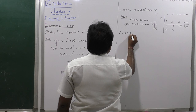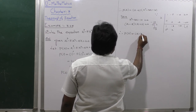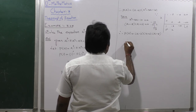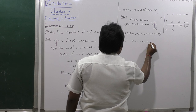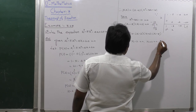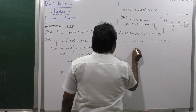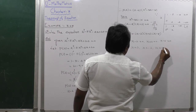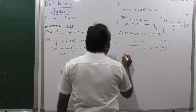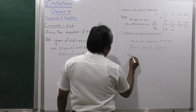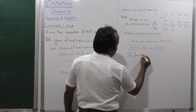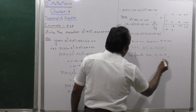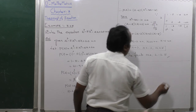Therefore P(x) factors completely as (x minus 2)(x plus 2)(x minus 5). Setting each factor to zero: x minus 2 = 0 gives x = 2; x plus 2 = 0 gives x = minus 2; x minus 5 = 0 gives x = 5. Therefore the solutions are x = 2, minus 2, and 5.